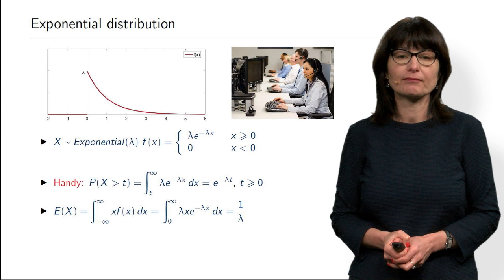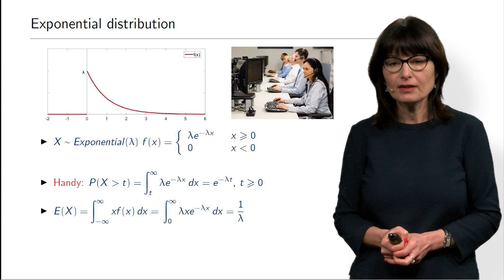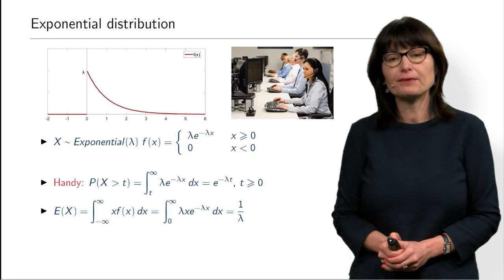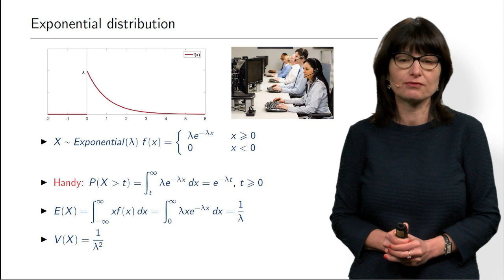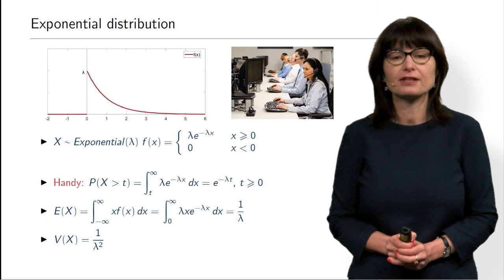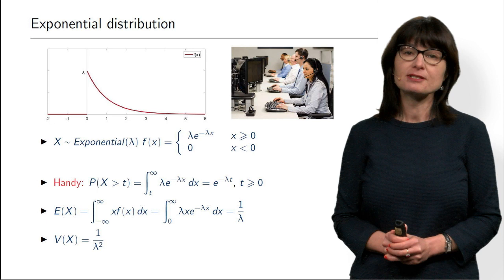So basically, if the duration of a phone call is exponentially distributed with parameter, say, 1/5 — measured in minutes — then the average duration of the call is 5 minutes. As for the variance, I will not show the computation, but the answer is 1/λ². So this is exponential distribution: its density, its expectation, its variance, and a very convenient formula for computing the probability that the exponential random variable exceeds a specific value.